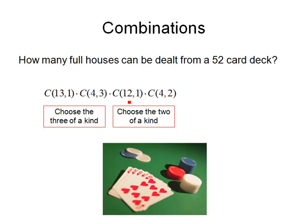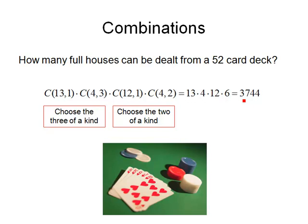From the remaining 12 denominations, we need to choose one more — we use 12 because we don't want the same denomination as the 3 of a kind. From those 12 we choose 1, and from the 4 cards in that denomination we choose 2, giving us our pair. So we multiply C(13,1) × C(4,3) × C(12,1) × C(4,2) = 13 × 4 × 12 × 6 = 3,744 full houses out of the giant number of 5-card hands.